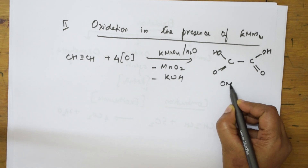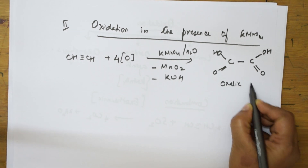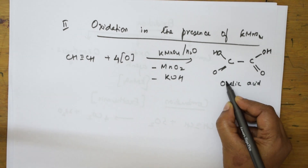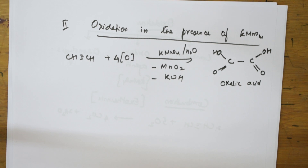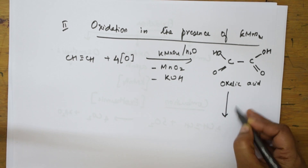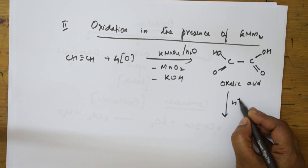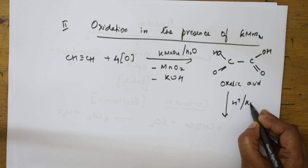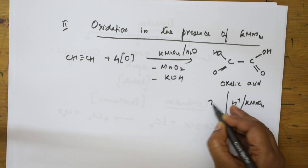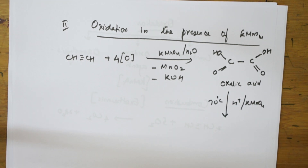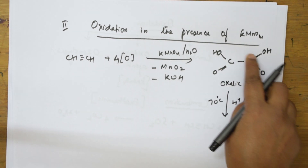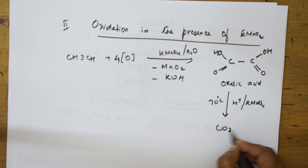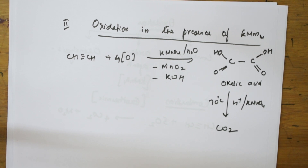The name of this compound is oxalic acid, HCOOH. This oxalic acid, when further treated in the presence of acidic medium and KMnO₄ at 70°C, undergoes further oxidation, and carbon dioxide comes out as a product. So this is your oxidation with KMnO₄.